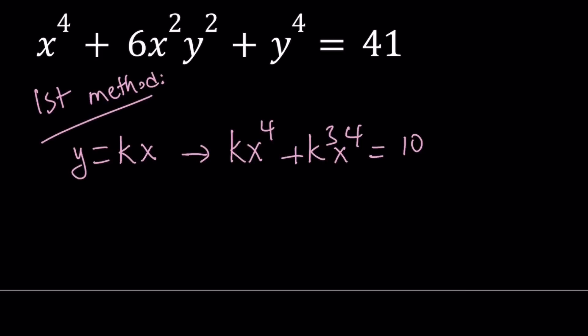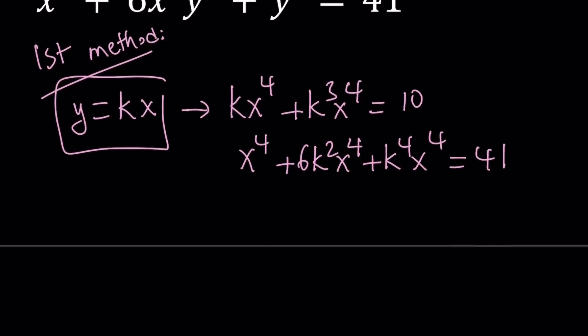In the first one, second part, k cubed x cubed is just going to give us k cubed and then x to the fourth power. And that equals 10. Obviously, here we can factor out x to the fourth. That's the goal. Let's go ahead and do it with the second equation. And now we're going to replace y with kx. x to the fourth is going to be unchanged. y is going to be squared. So k squared x squared, but that's 6k squared x to the fourth power. Because x squared is multiplied by x squared. And then, finally, y is going to be kx. So it's going to be k to the fourth x to the fourth. And this is equal to 41.